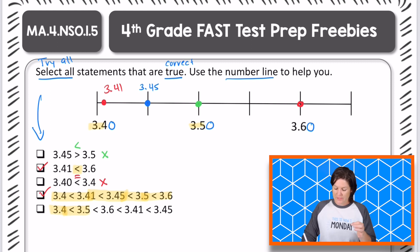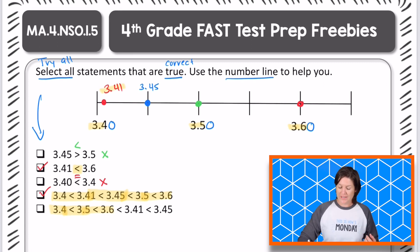Next, 3.5 tenths. Is that less than 3.6 tenths? Yes, it is. So we're good so far. Is 3.6 tenths less than 3.41 hundredths? No, it's not. So this is where it goes wrong. This one actually is 3.6 tenths is greater than 3.41 hundredths. So we can go ahead and eliminate that one. So the second choice and the fourth choice are your answers for this one. And that's your problem of the week.